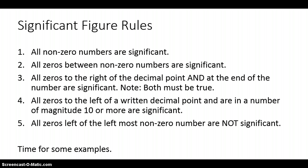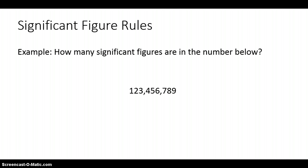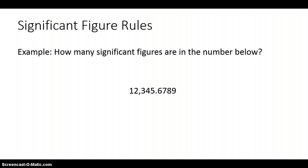Let's look at some examples to drive home the rules. Example one: how many significant figures are in the number shown? Based on rule number one, there are nine significant figures. Example two shows a similar number — again, there are nine significant figures, applying rule number one.